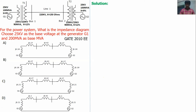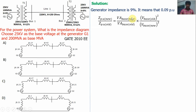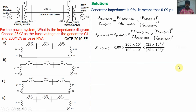First, we calculate the generator per unit impedance. The generator impedance is given as 9%, which means 0.09 per unit. This value applies when the base is 25 kV and 100 MVA. But the system base is different — 200 MVA — so we use the base-change formula: Z_pu_new equals Z_pu_old times (VA base new / VA base old) times (V base old squared / V base new squared). Substituting Z_pu_old = 0.09, VA base old = 100 MVA, VA base new = 200 MVA, V base old = V base new = 25 kV, the answer is 0.18 per unit.